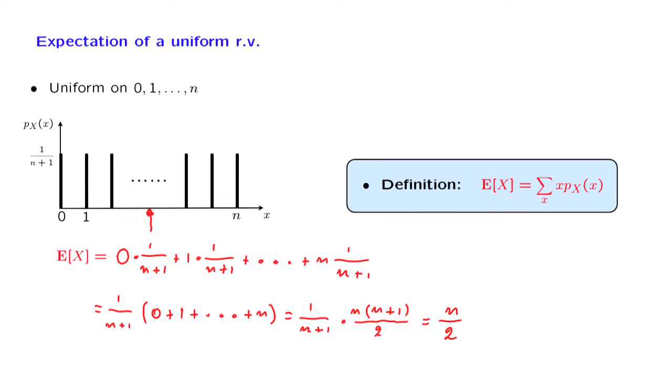And we first find the PMF of this random variable. Any particular xi that is possible is associated to exactly one student, because we assumed that the xi's are distinct. So this probability would be the probability of selecting the i-th student, and that probability is 1 over n. And now we can proceed and calculate the expected value of the random variable x.